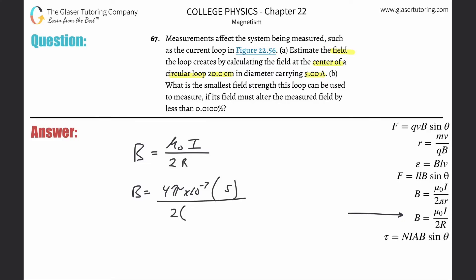Divided by 2 times the radius. But they told you this has a diameter of 20 centimeters, so half of that is the radius, 10 centimeters. We need that in meters, so just divide that by 100.